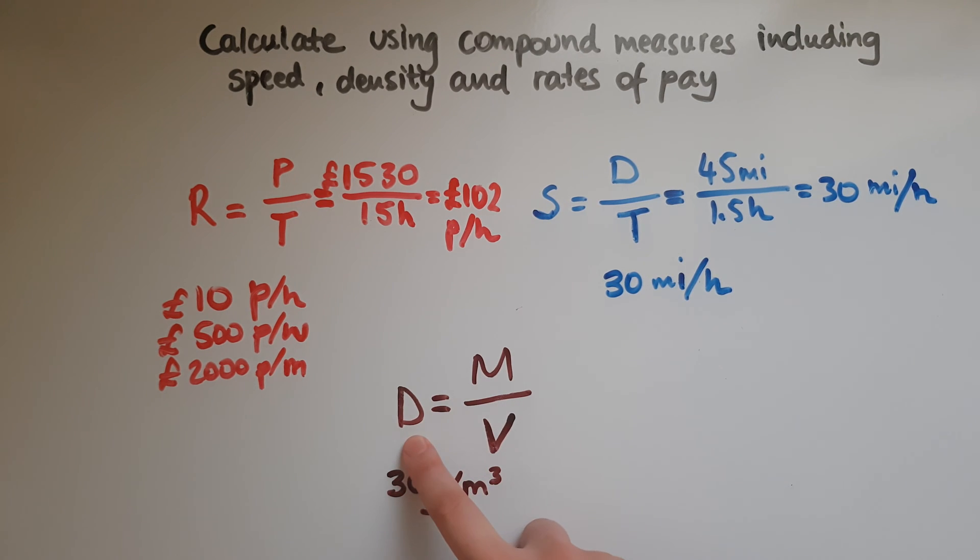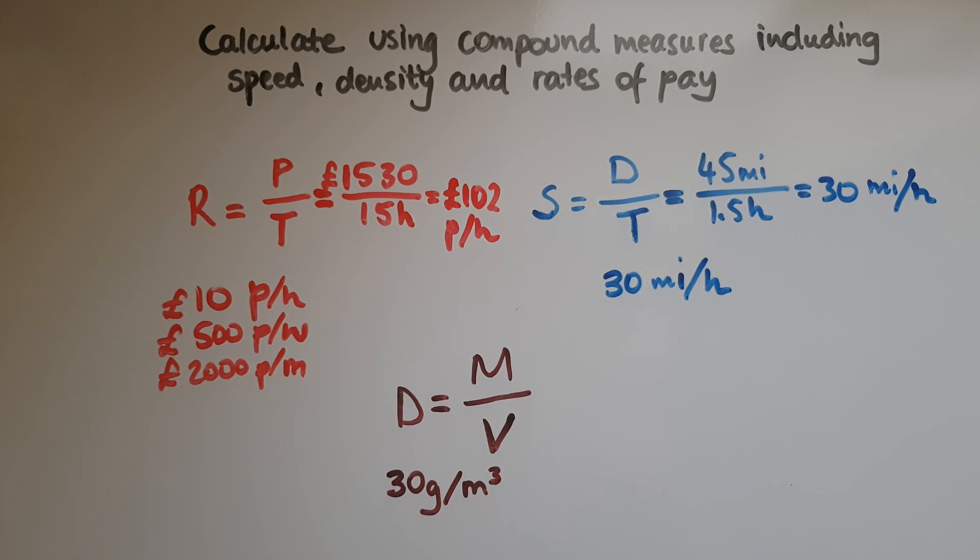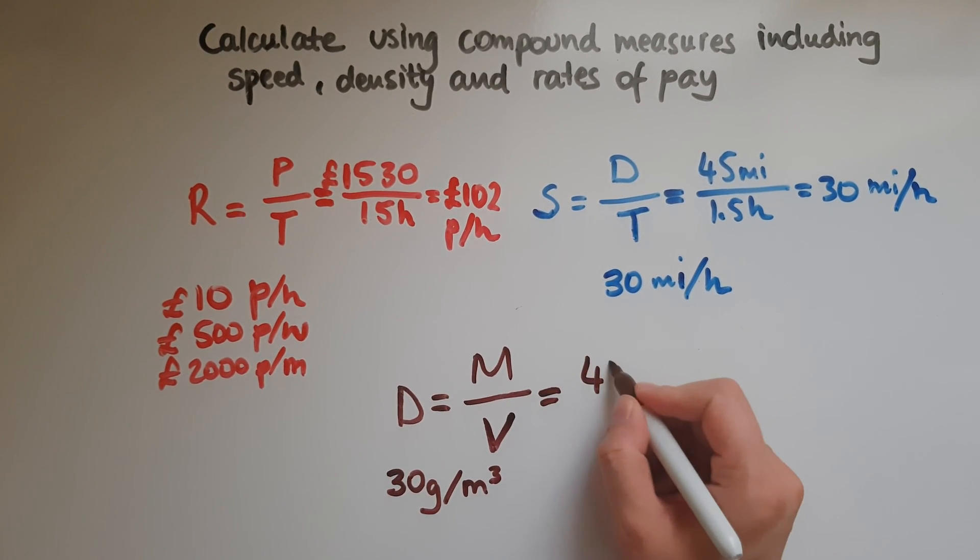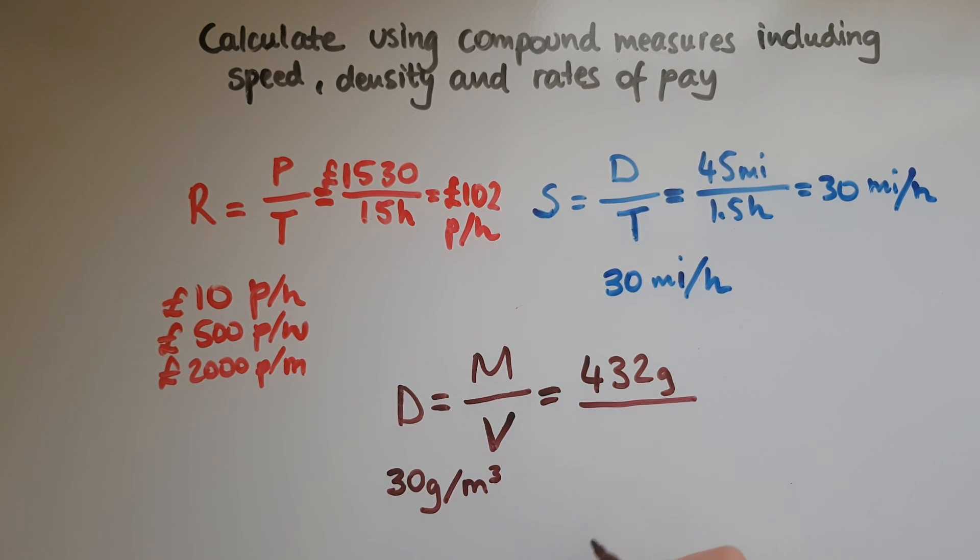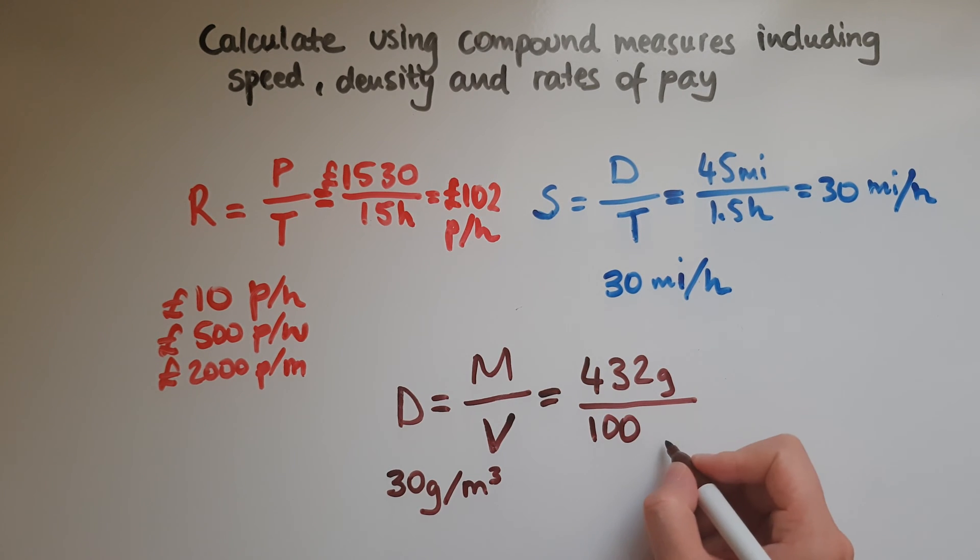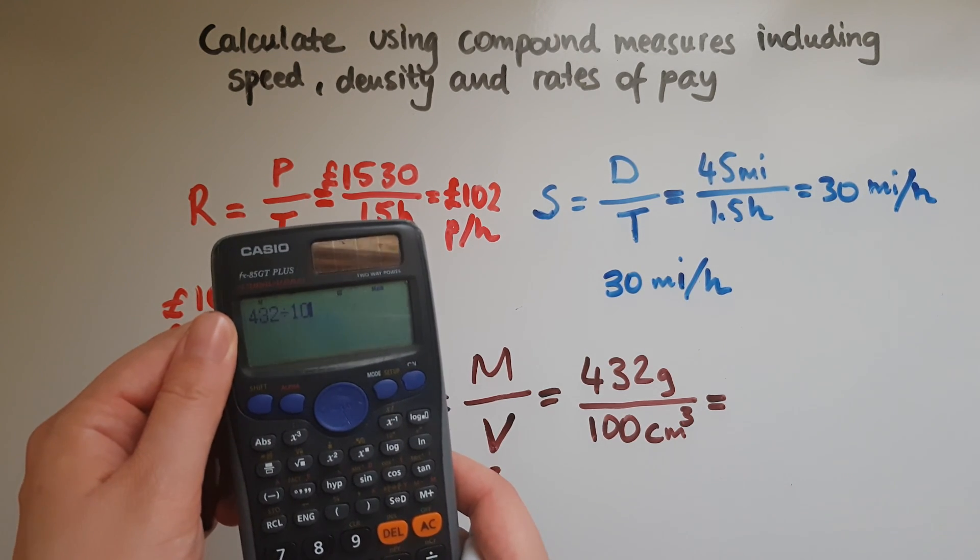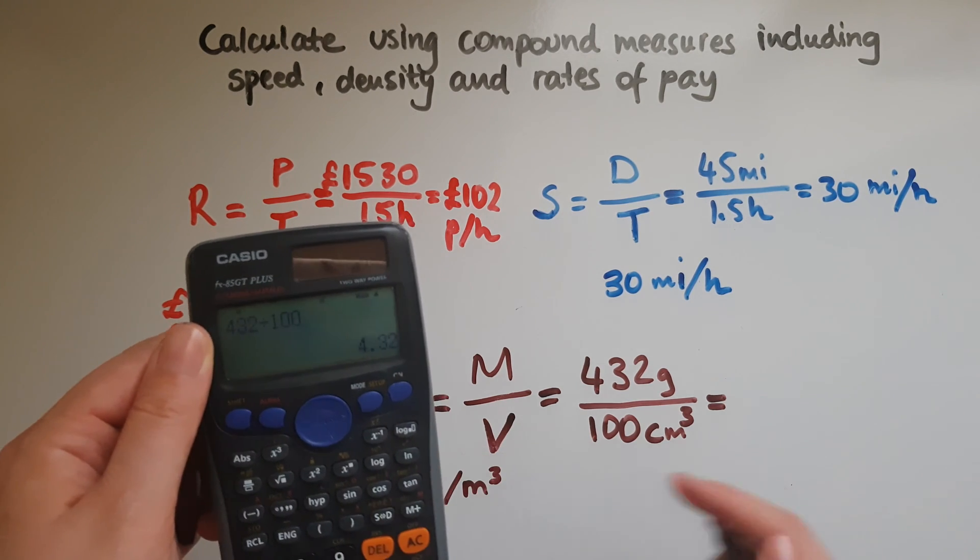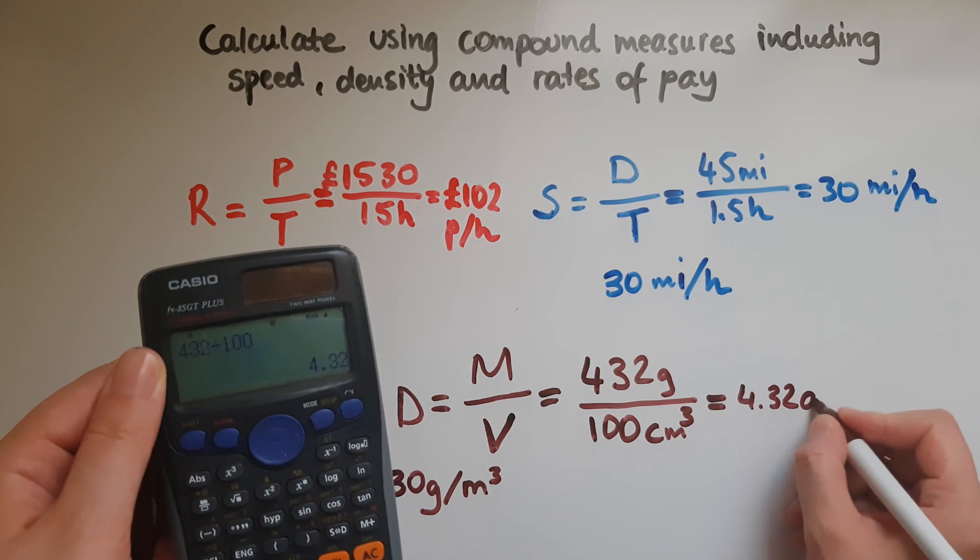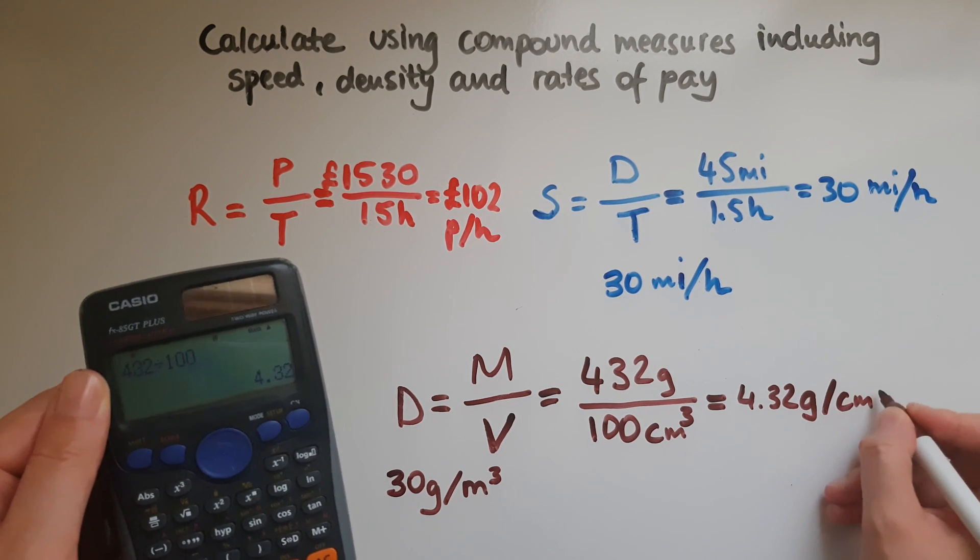So the way we work out density is by getting the mass and dividing it by the volume. Here is one example, 30 grams per cubic meter. So if the mass of an item is, let's say, 432 grams, and the volume is perhaps 100 cubic centimeters. Now, what is its density? Again, 432 divided by 100, that gives us 4.32 grams per cubic centimeter.